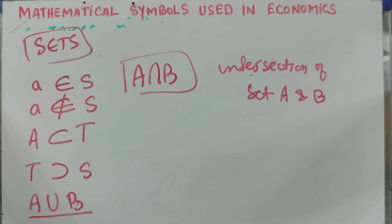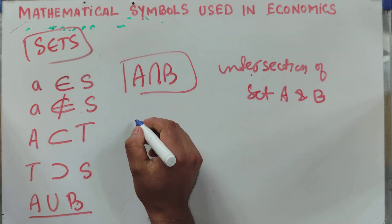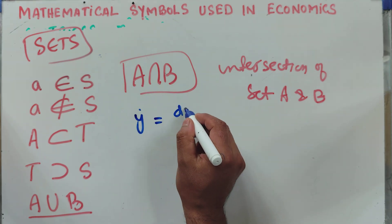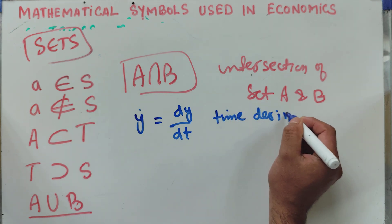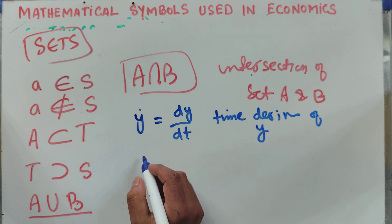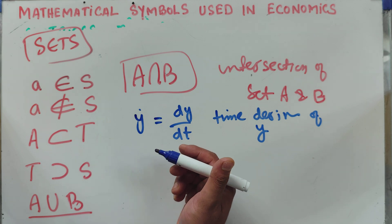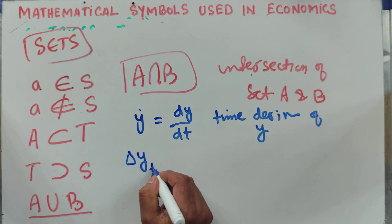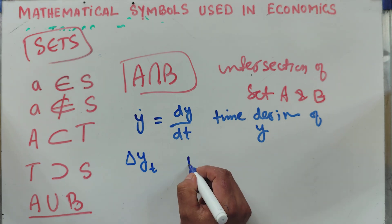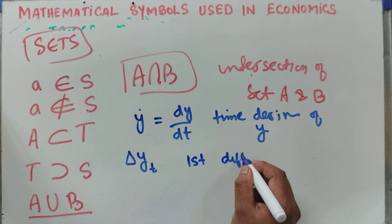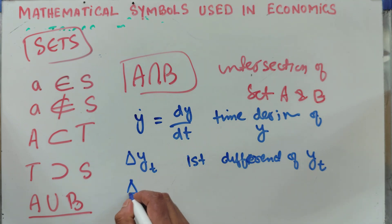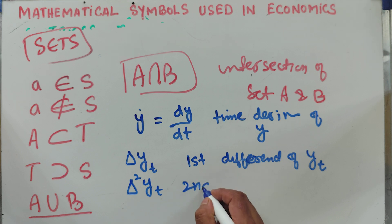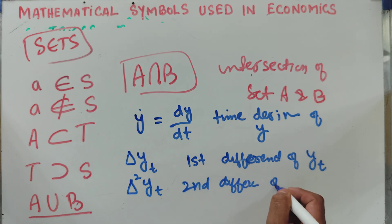In differential equations we also use y dot — in Newton's notation — which means dy upon dt, showing us the time derivative of function y. We also have the symbol delta y subscript t, which shows us the first difference of y-t, and delta squared y-t, which shows us the second difference.